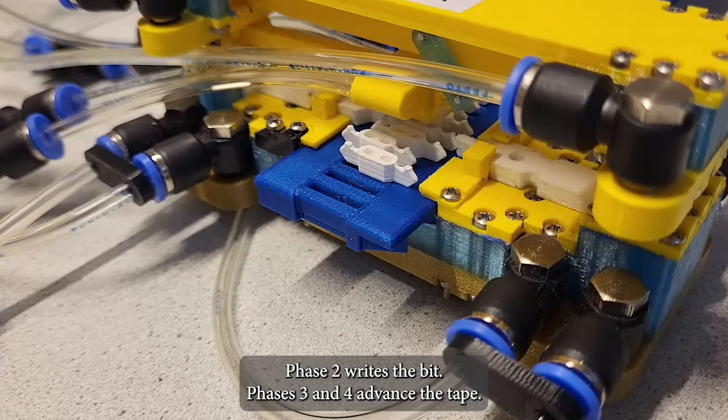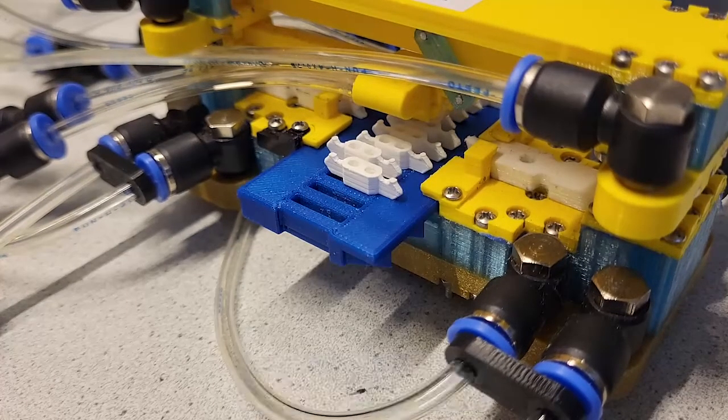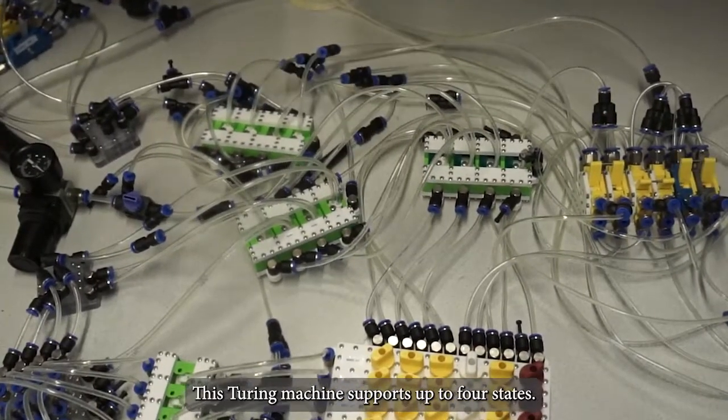Phase 2 writes the bit. Phases 3 and 4 advance the tape. This Turing machine supports up to four states.